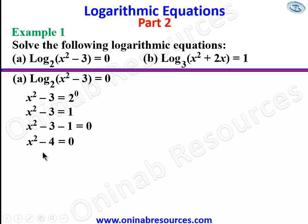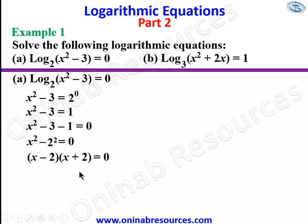We apply the difference of two squares here, since 4 is a perfect square — 4 can be written as 2². So we have (x − 2)(x + 2) = 0. We have x² minus 2², so we pick (x − 2)(x + 2) equals zero.